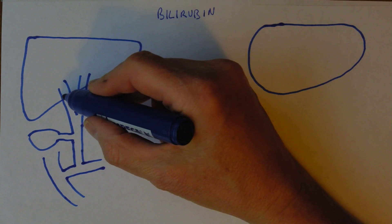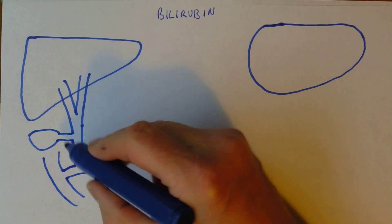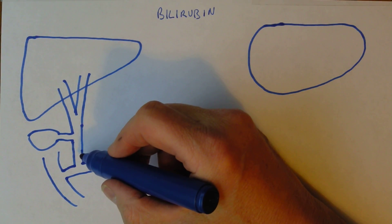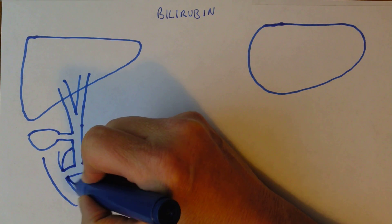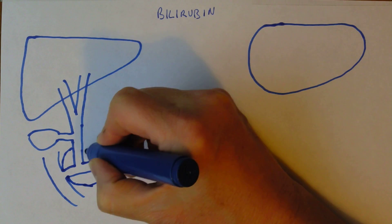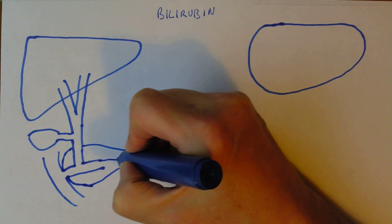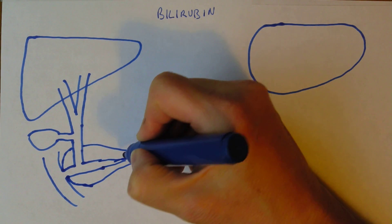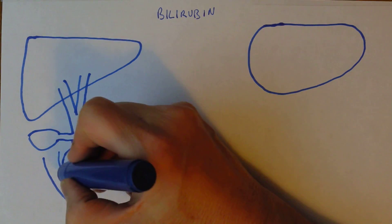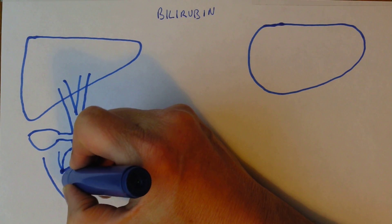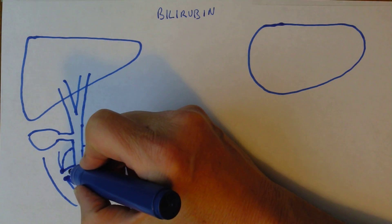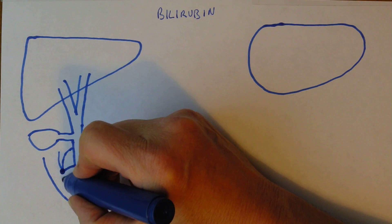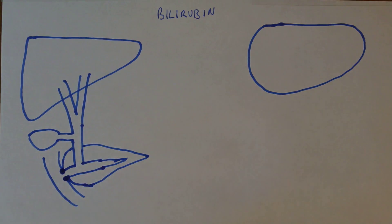So we have the hepatic ducts, the common hepatic duct, the cystic duct, the gall bladder, the common bile duct, and the pancreas is around here. This would be the pancreas itself with the pancreatic duct running through to collect the digestive enzymes. This common bit at the end is the hepatopancreatic ampulla and there's a sphincter, the hepatopancreatic sphincter, formerly called the sphincter of Oddi.